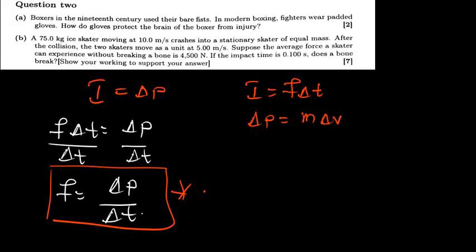So gloves, they are going to protect the brain injury by increasing the duration of the impact. So they will increase the time. So if we increase the time, if the time increases here, from our formula if we increase the time, the force is going to reduce. If the force is being reduced, meaning the impact will be less.